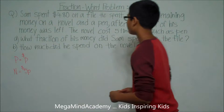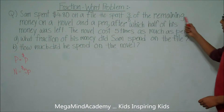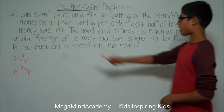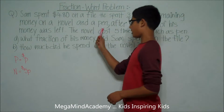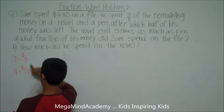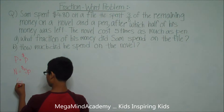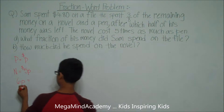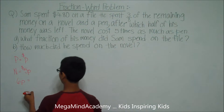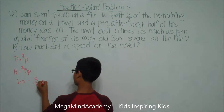The problem states that he spent three-eighths of the remaining money on a novel and a pen. So this means that 5P plus P, or 6P, is equal to three-eighths, or three units.